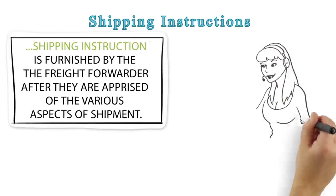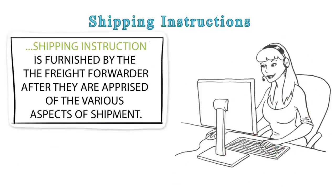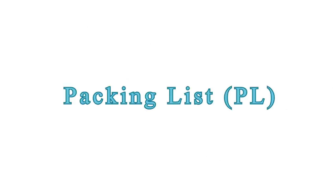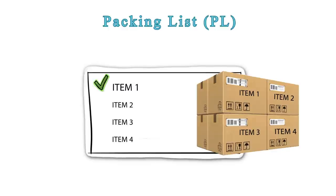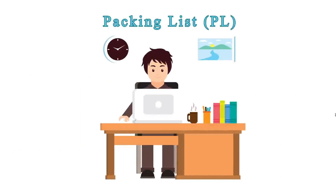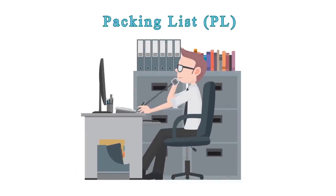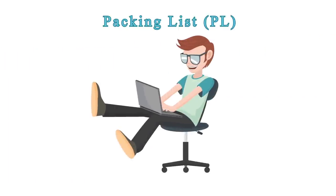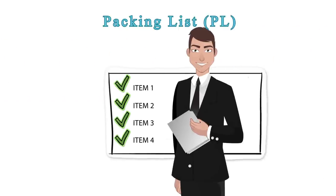Shipping Instructions are furnished by the freight forwarder after they are apprised of the various aspects of shipment. Packing List: The Packing List contains an item-wise list of the package contents. It serves to inform all parties like transport agencies, government authorities, and the buyer about the contents of the package, and is referred to when customs authorities inspect a shipment.